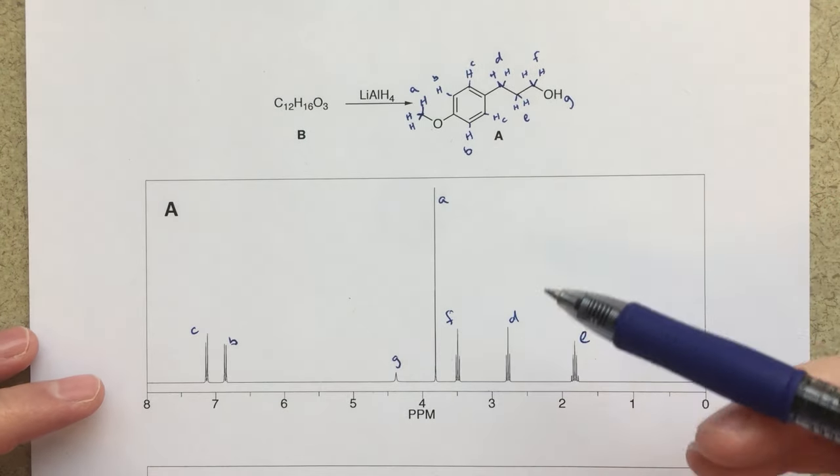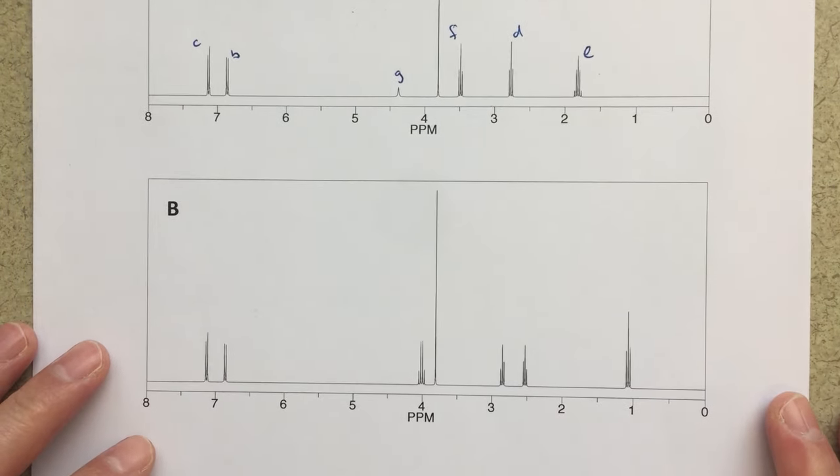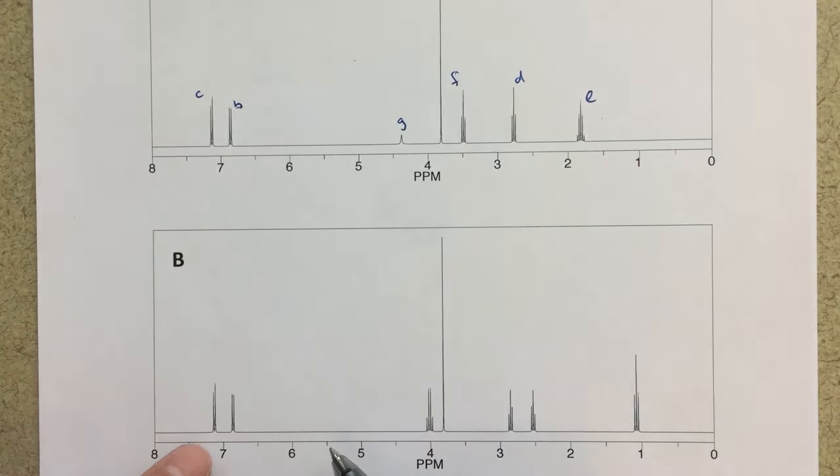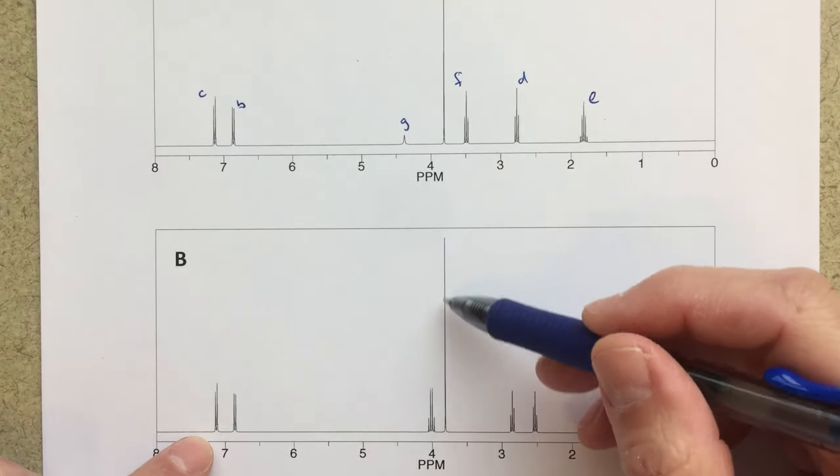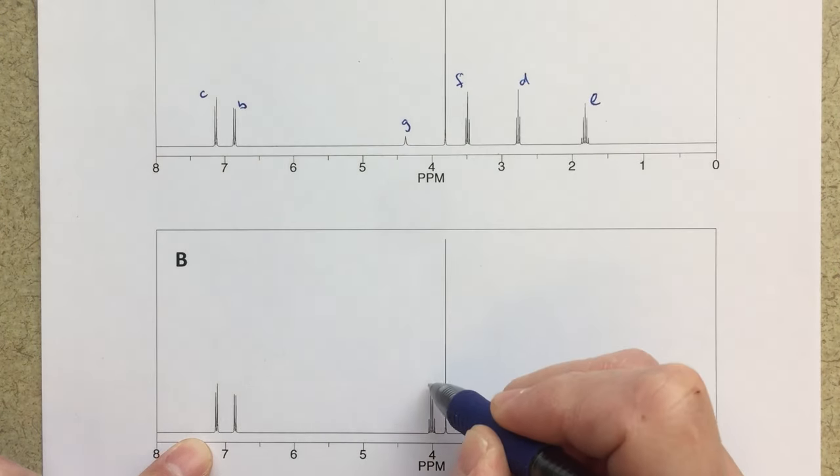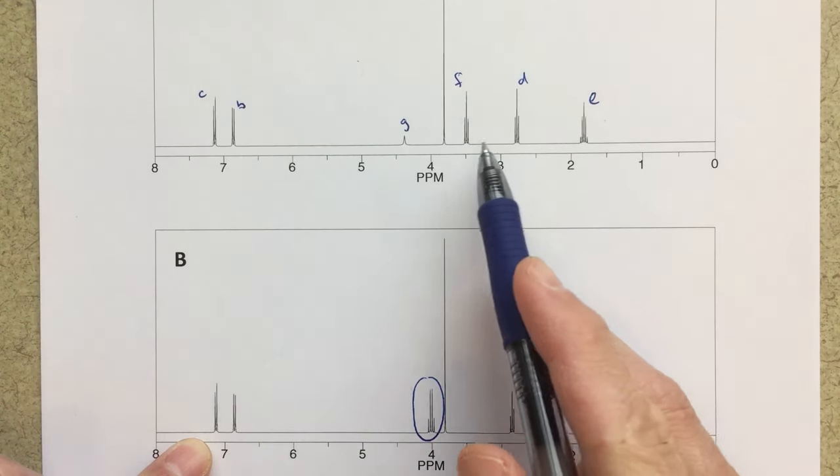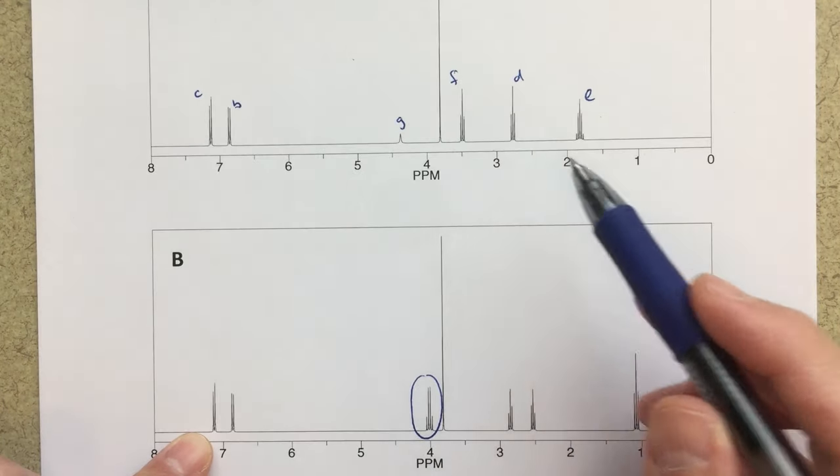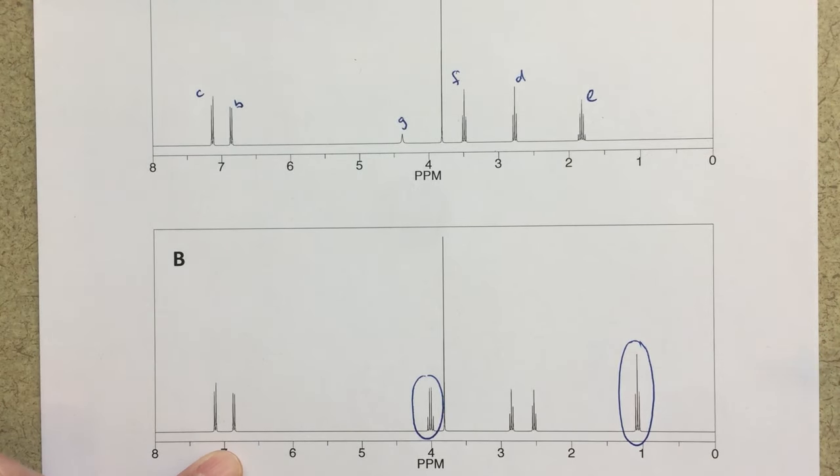All right, so that is the assignments for our A compound, and then we can start looking at this B compound. So right away I'm going to sort of look for similarities and differences. So obviously I think we've got some similarities in our aromatic region. These look exactly the same. I've got this three H singlet, so that looks exactly the same. This is definitely a new peak, right? So right here, this is going to be new. These, they could just be shifted versions of these, E, D, and F. So those may be a little bit unclear.